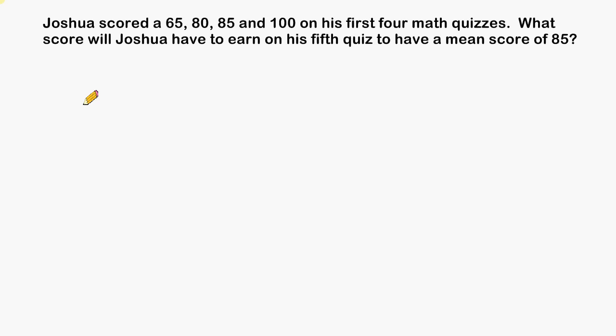Joshua scored a 65, 80, 85, and 100 on his first four math quizzes. What score will Joshua have to earn on his fifth quiz to have a mean score of 85?